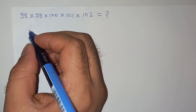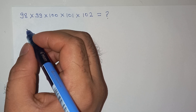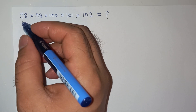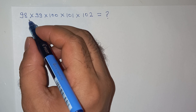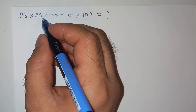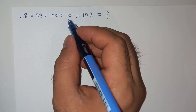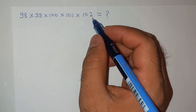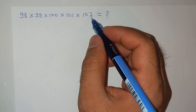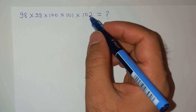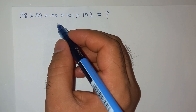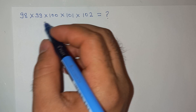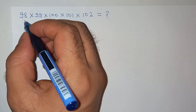Hi friends, welcome back to the channel. Today we will solve this question: 98 multiplied by 99 multiplied by 100 multiplied by 101 multiplied by 102, and we don't have to use a calculator. Let's see how to solve this question in an effective way.